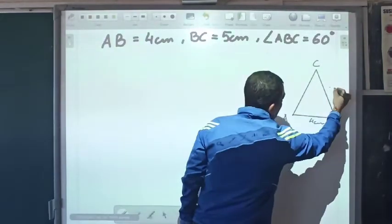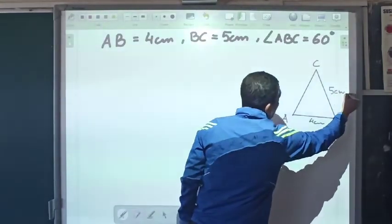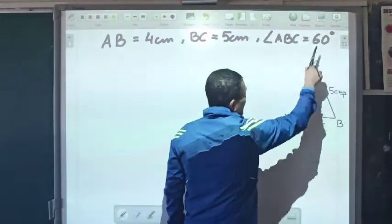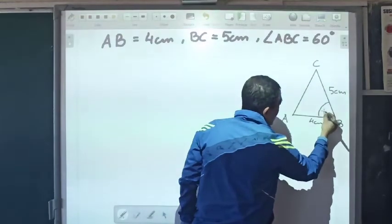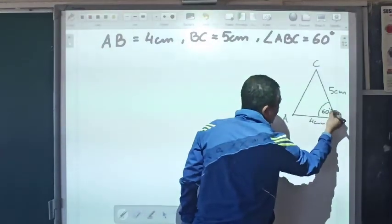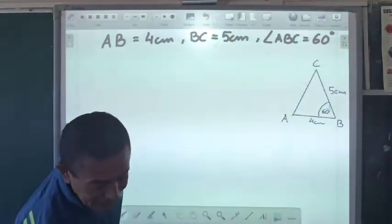BC is 5 cm. And angle ABC is 60 degrees, angle ABC. This one here is supposed to be 60 degrees.